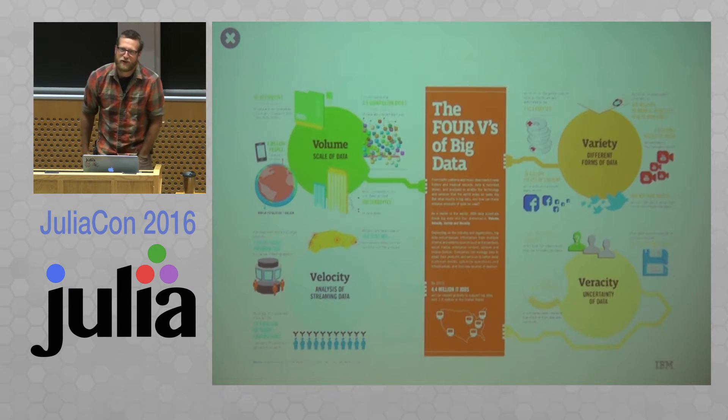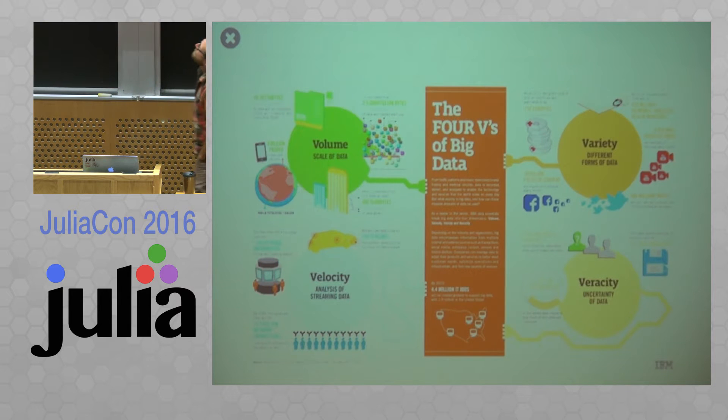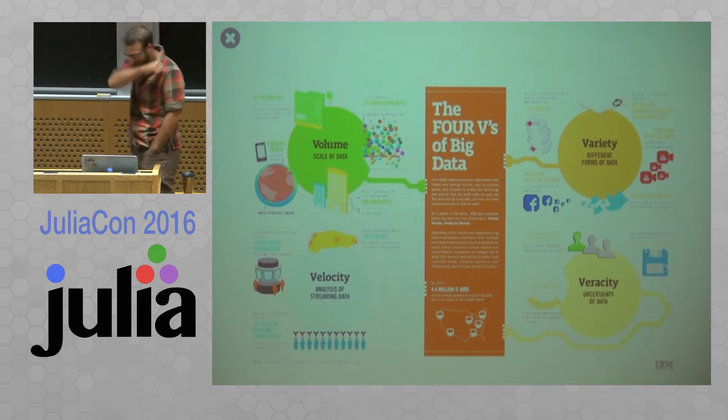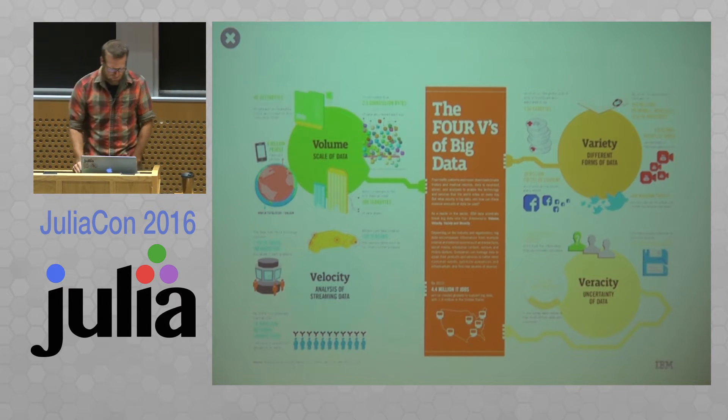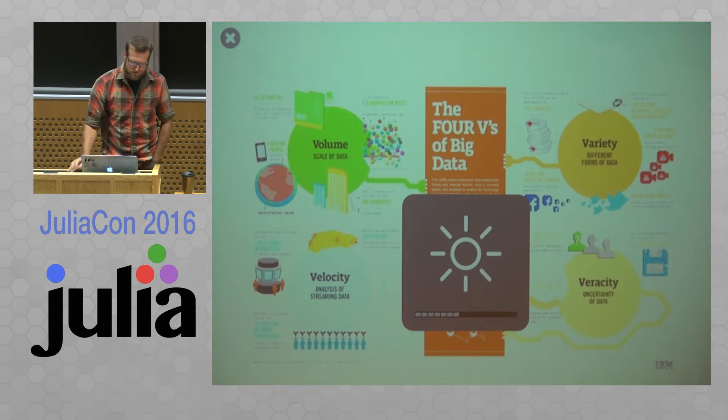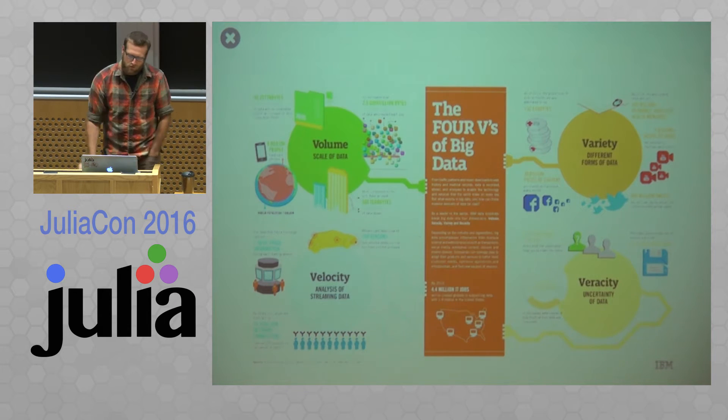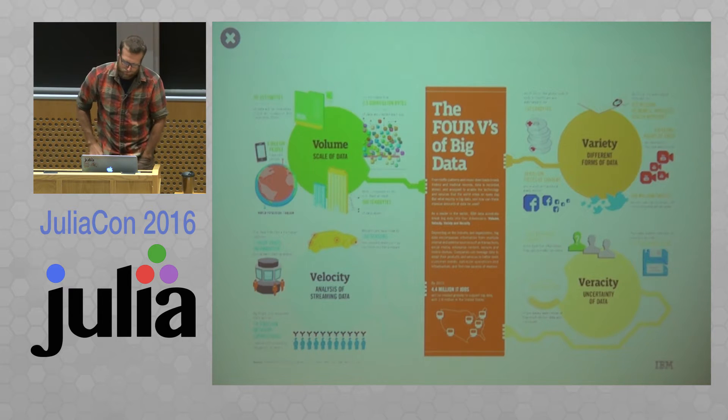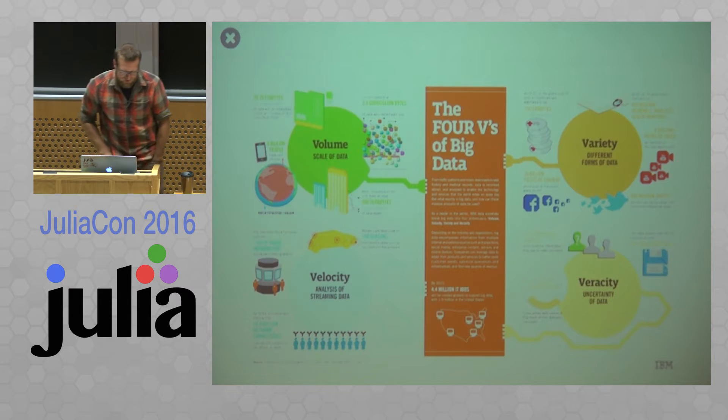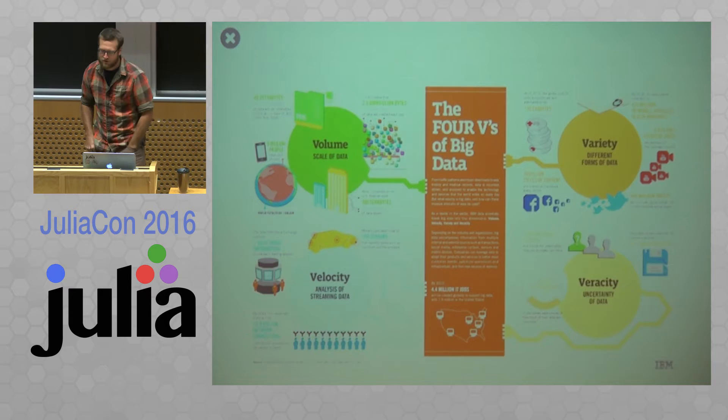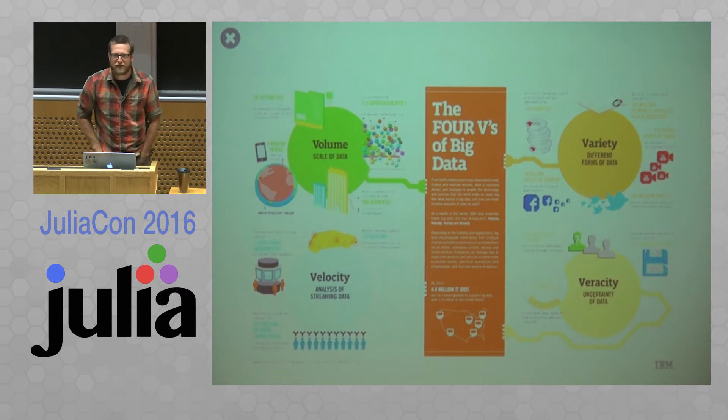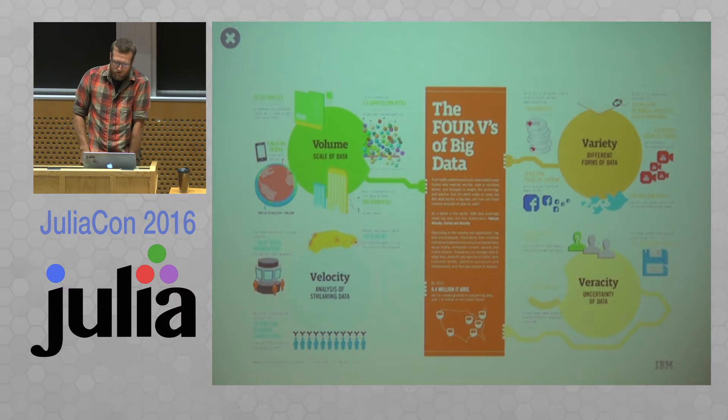Alright so first off I'd like to talk about what's motivating this work. So IBM released this infographic a couple years ago. So it's the four V's of big data. So we have volume which is the scale of data, velocity analysis of streaming data, variety different forms of data, and veracity uncertainty of data. And so typically in a statistics education we are basically able to handle the right side of this. So we see data that has different variety and we see veracity. So we're used to different forms of data and missing values and that's things statisticians know how to handle.